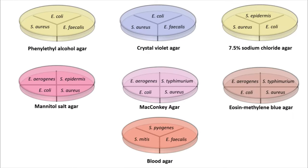In this lab we are going to be exploring seven different types of selective and/or differential media by inoculating them with a variety of species of bacteria. In this video I'm going to introduce you to the selective and/or differential purpose of each different type of media and show you some sample inoculations as well. It may be helpful to have your lab activity printed out, as it contains pictures of actual plates with bacteria growing on them for each of these seven categories.